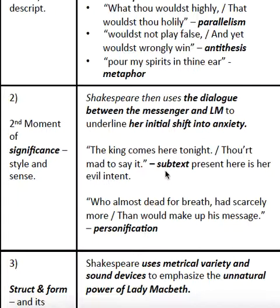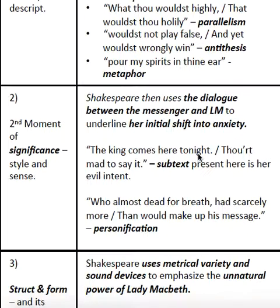So again, we're looking for that style and sense combination. 'Shakespeare then uses the dialogue between the messenger and Lady Macbeth to underline her initial shift into anxiety.' The dialogue between the messenger and Lady Macbeth is the element of the writer's choice that Shakespeare uses, and the meaning is to show her shift into anxiety, into stress. The quotations — 'the king comes here tonight,' 'thou art mad to say it' — the subtext in this dialogue, what is not being spoken about, is important here. The subtext present here is her evil intentions; she isn't saying why he would be mad to tell us that the king comes here — because he's fallen into her murderous trap.